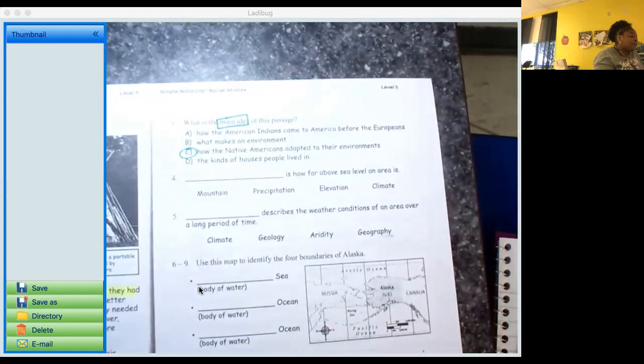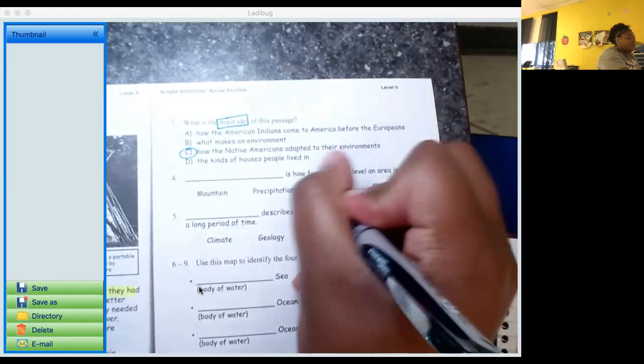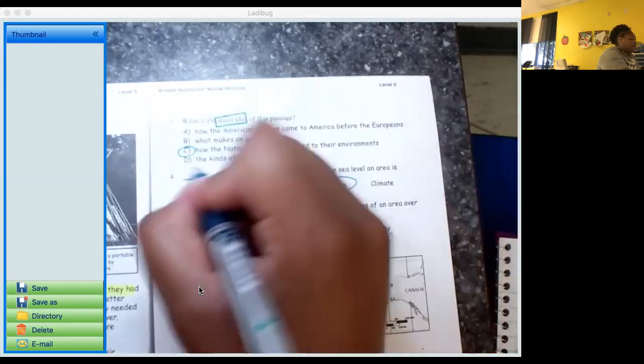Alright, number four. Blank is how far above sea level an area is. Alright, we talked about this word when we were talking about physical maps, shows how high something is, and that is the elevation. Okay, so let's circle elevation and write it in the blank.